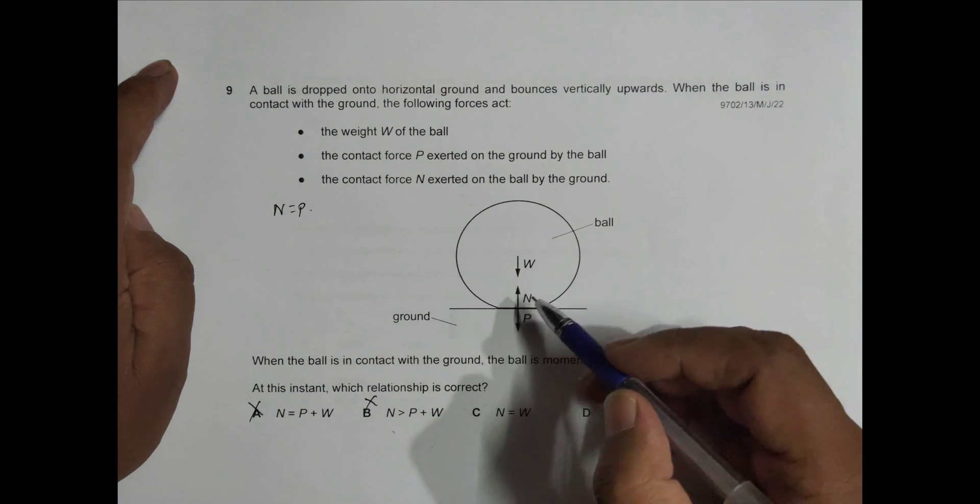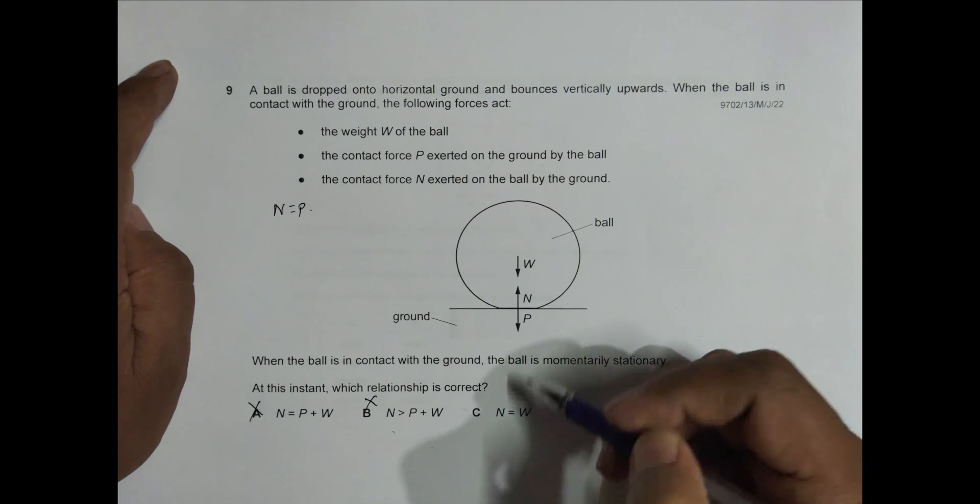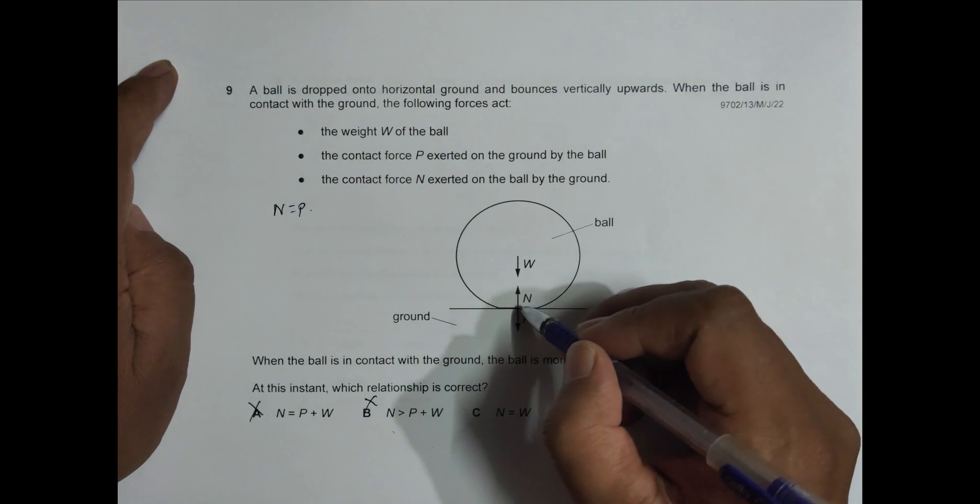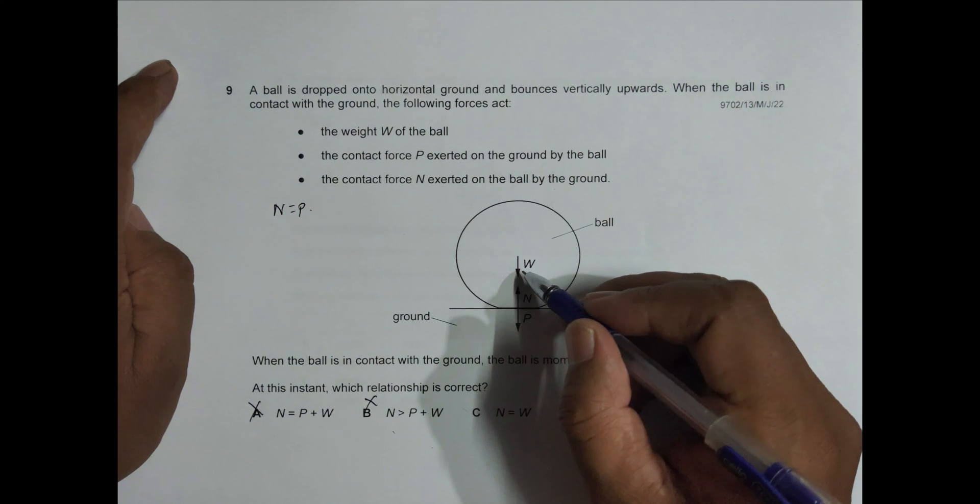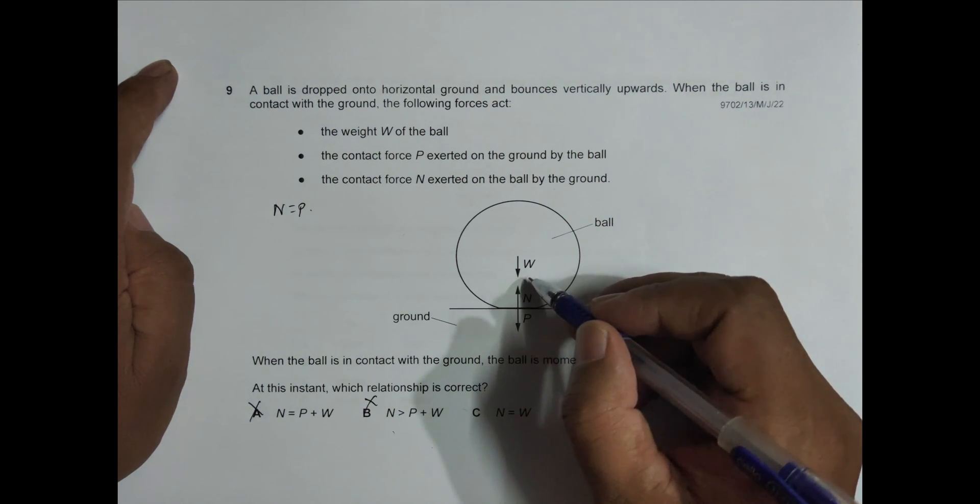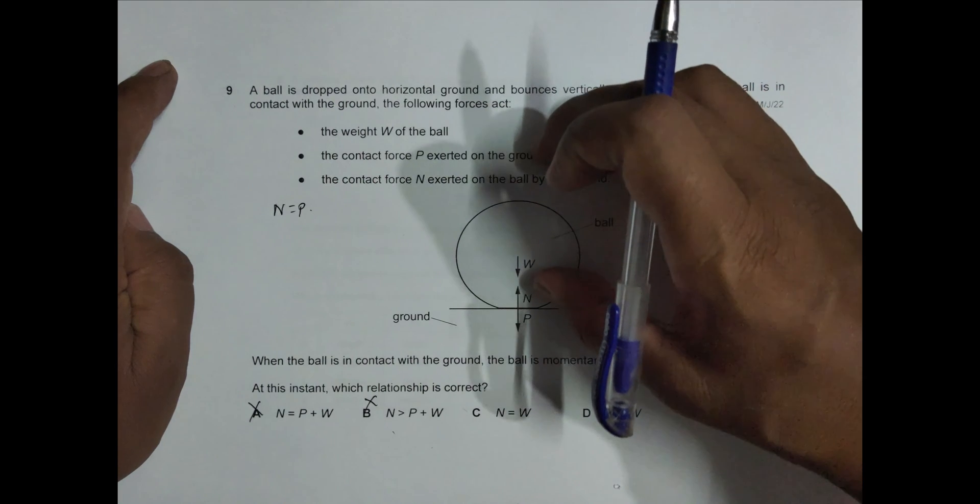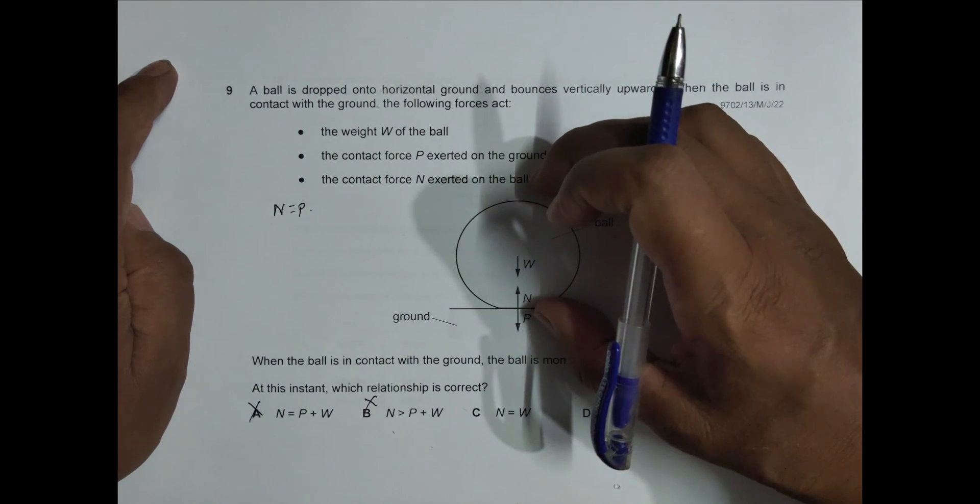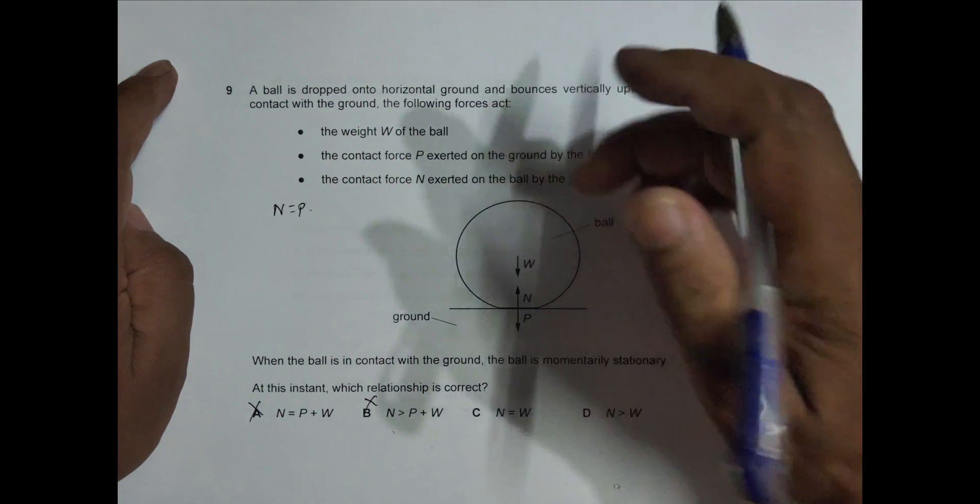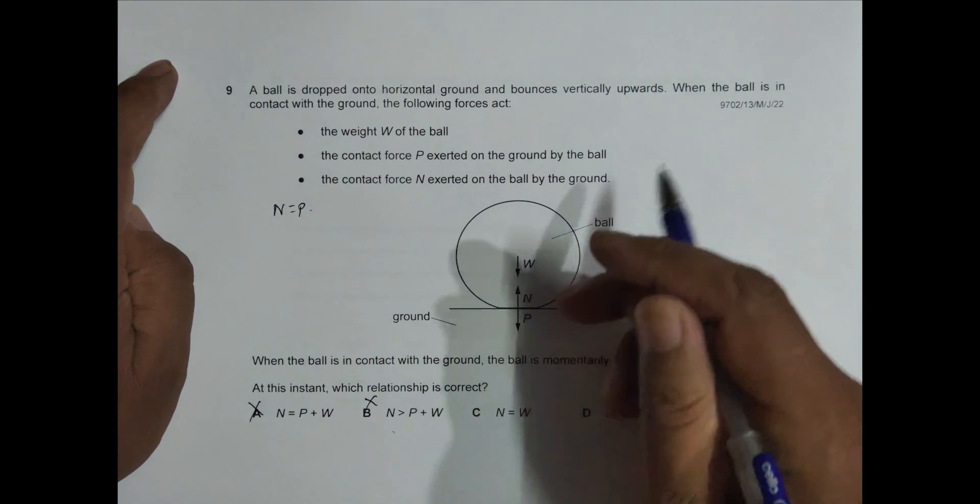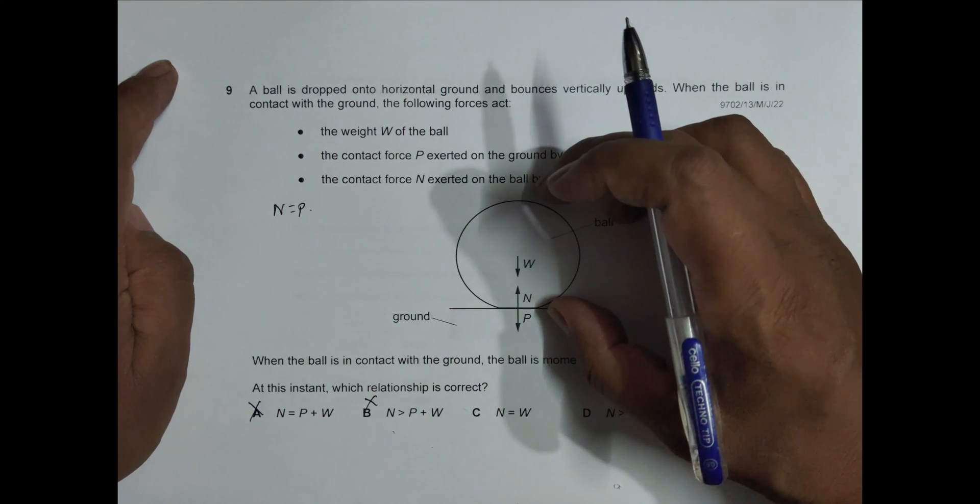In the third one, it is said N equals W. So if N equals W, then there will be no resultant force. That's why the ball would not rise, because the ball has gone in contact for some moment and then it has to come back. So if these two forces are equal, then the ball will be at rest and would not come upward, so this is not true as well.